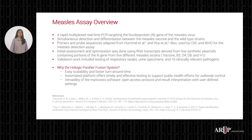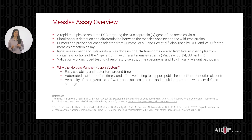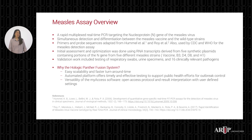Here is a brief overview of the measles assay. This assay is a rapid multiplex real-time PCR targeting the nucleoprotein gene of the measles virus. One of the key advantages of this assay is its ability to detect and differentiate between the measles vaccine and wild-type strains in a single test. Primers and probes used in this assay are adapted from methods developed by Hummel, Roy, and their colleagues, and these sequences are also employed by CDC and WHO for their measles detection assay. Initial assessment and development was done using RNA transcripts derived from five synthetic plasmids containing portions of the N gene from five different measles strains.